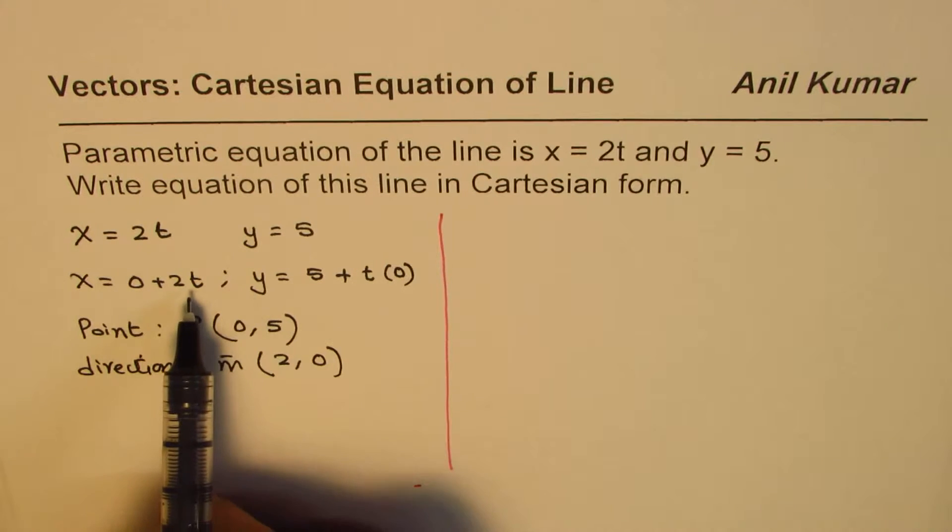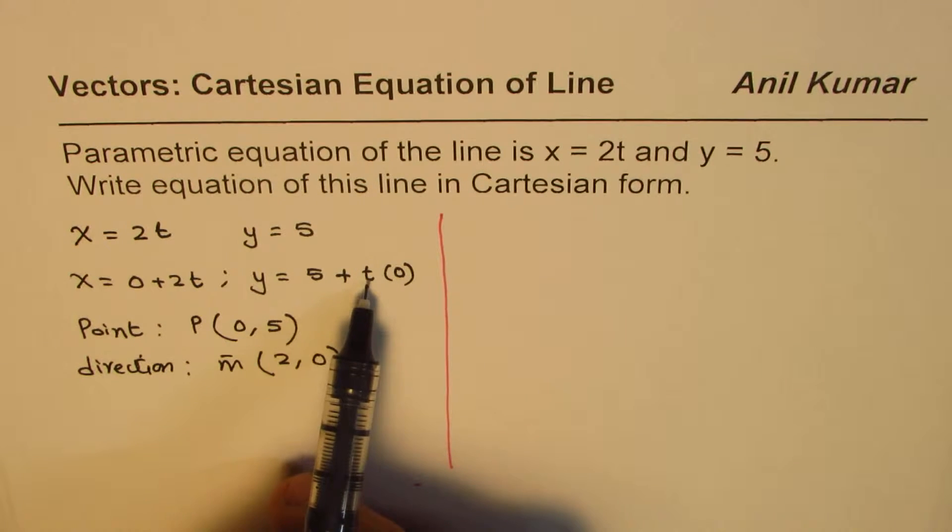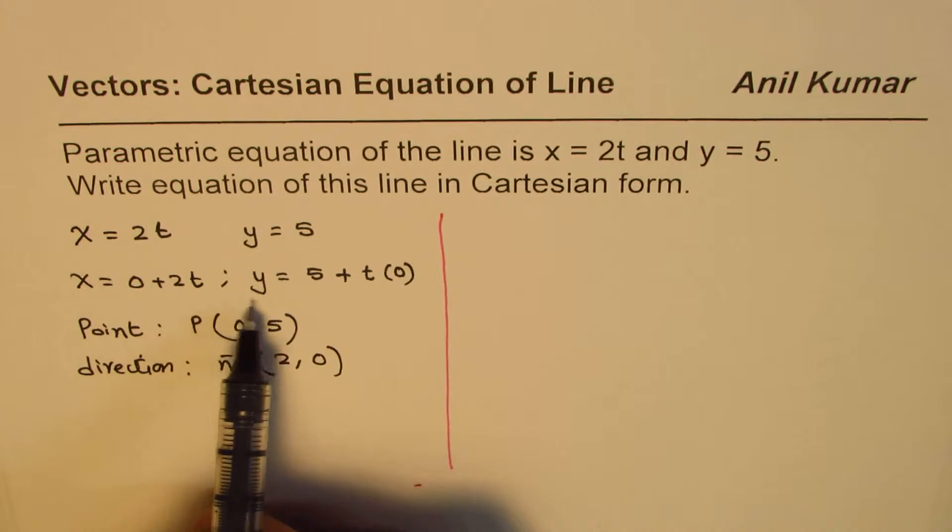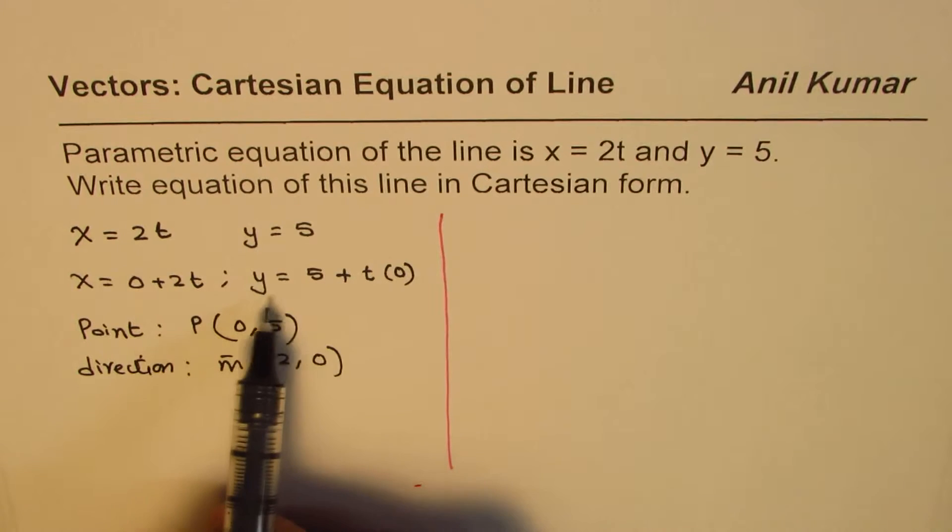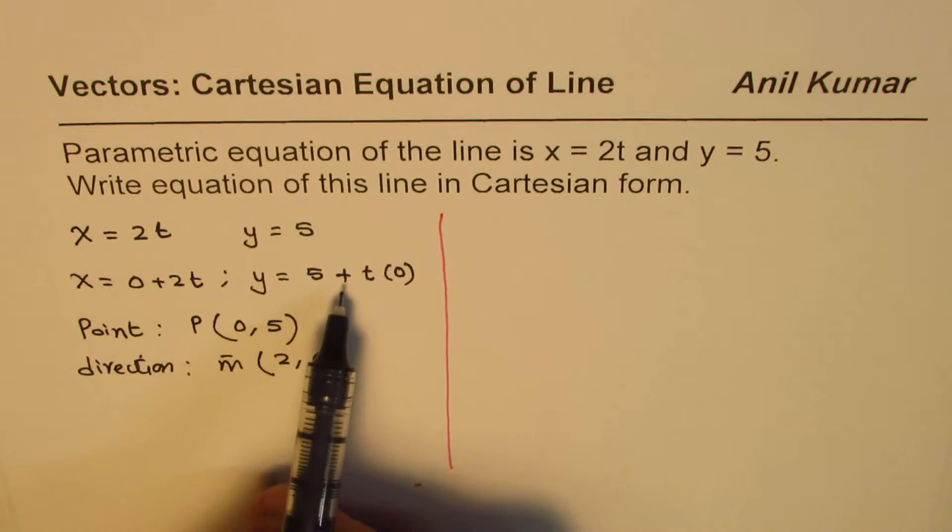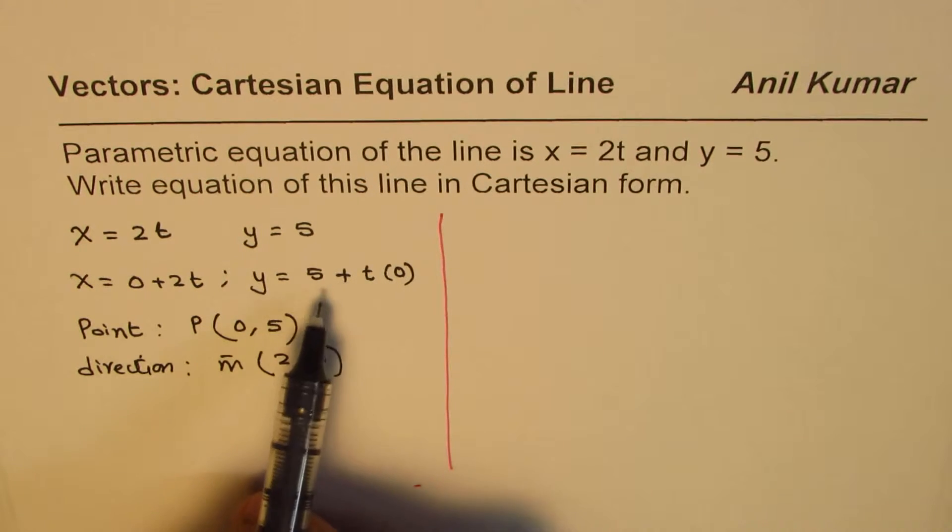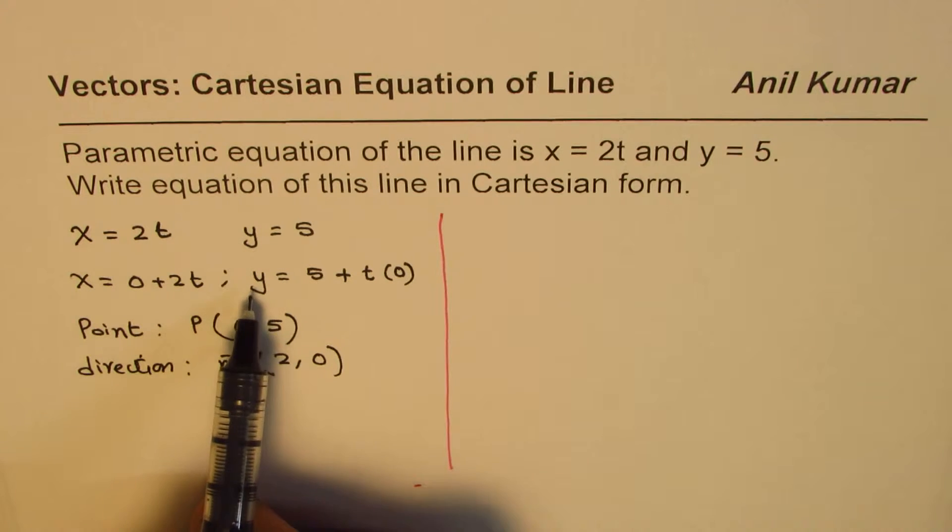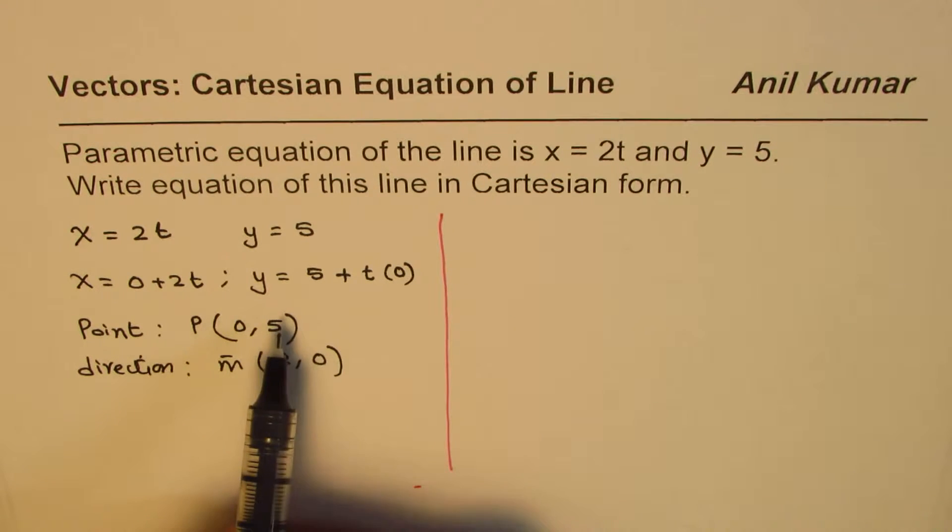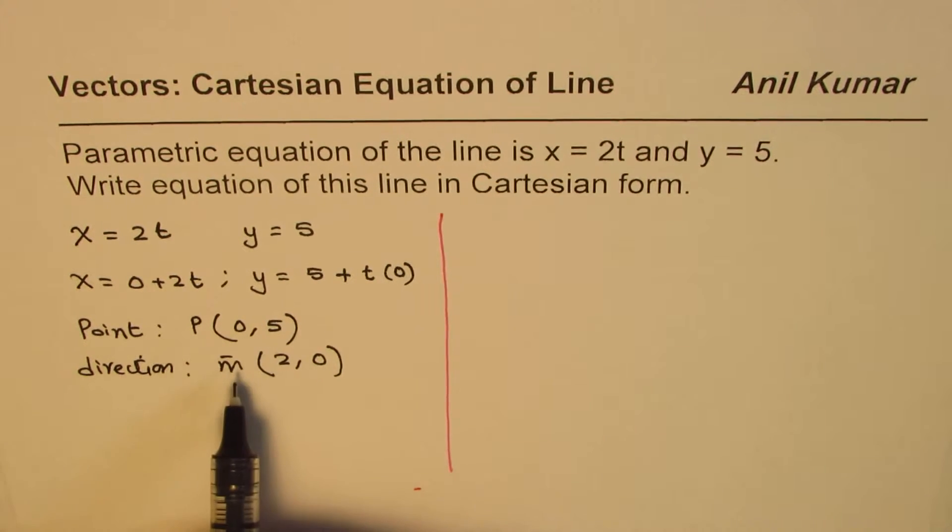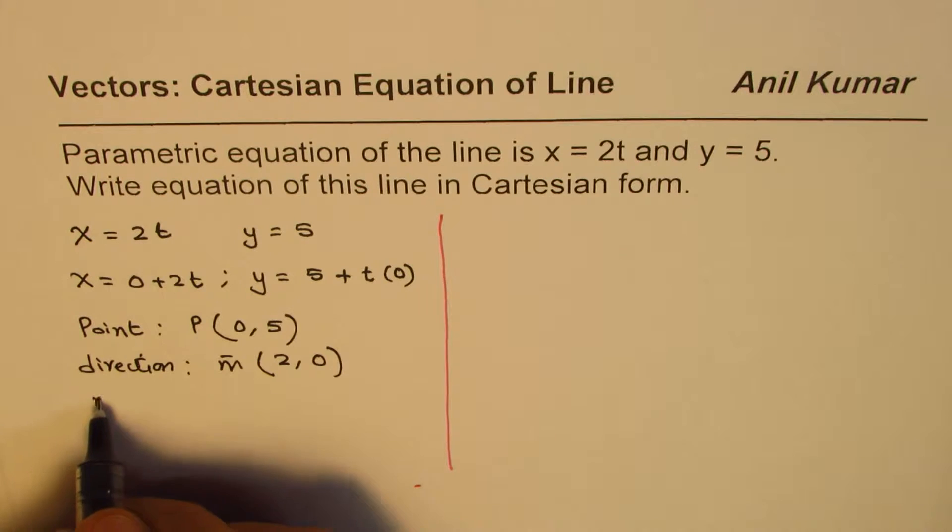Now in this particular case, since to isolate t we have to divide by 0, it becomes difficult. So we cannot do that when we have a line which has zero slope. In this case, the best way is since we know what the direction vector is, we can find the normal.